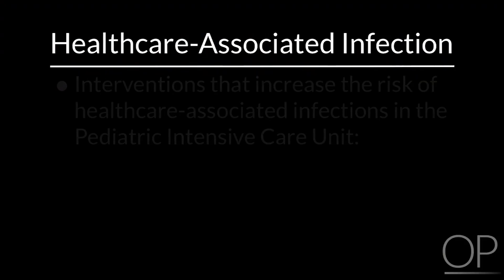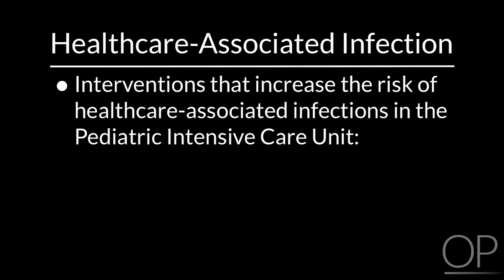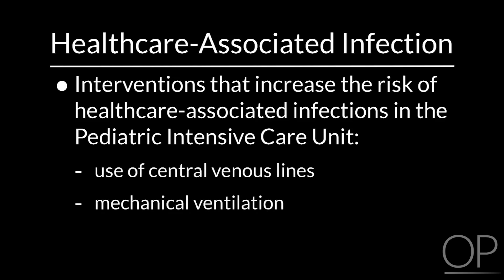It is important to remember that in pediatrics, newborns have immature immune systems, and cardiac patients may have other conditions such as asplenia or DiGeorge syndrome, which increase the risk for infection. The three most common interventions that increase the risk for health care-associated infections in the pediatric intensive care unit are the use of central venous lines, mechanical ventilation, and total parenteral nutrition.